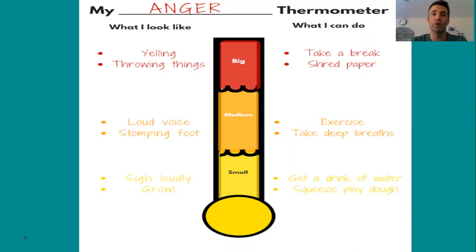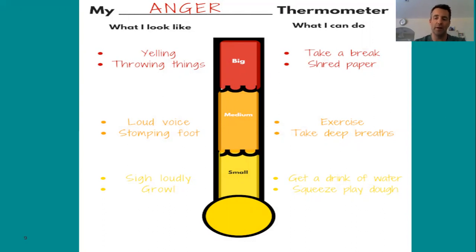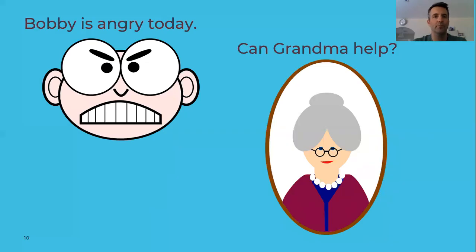Then we've got the red zone right at the top — that's when anger has really struck and you are not feeling happy at all. That could be yelling or throwing things. What can we do? We can take a break from whatever we're doing, or shred some paper — but make sure you ask an adult first. The most important thing is that we don't hurt ourselves or anybody else.